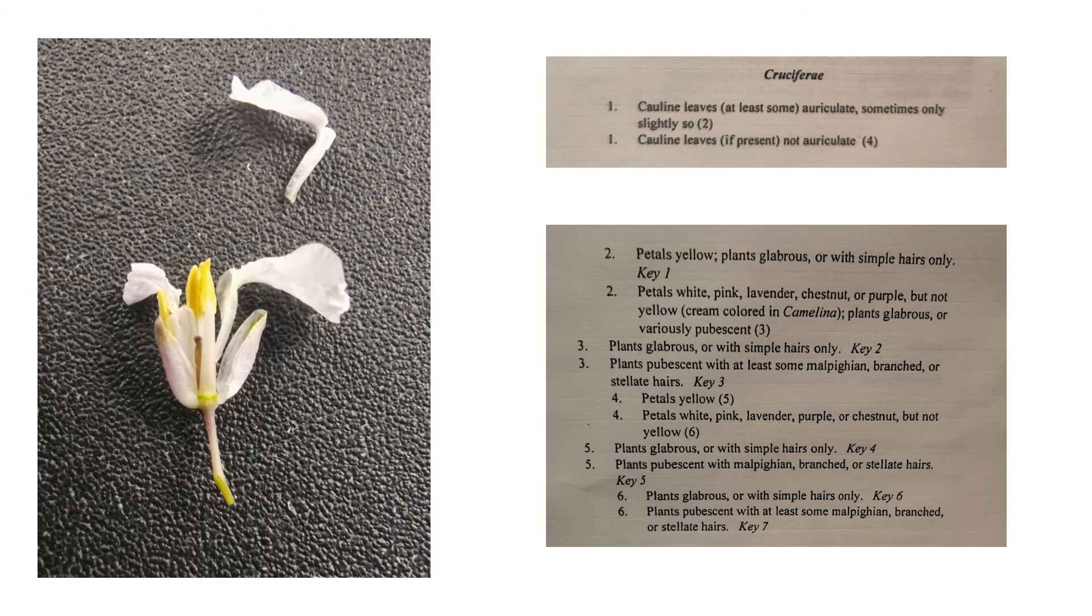Okay. Cauline leaves, at least some, auriculate, sometimes only slightly so. And these, the cauline leaves in this are auriculate. And you're probably asking, what does that mean? And auriculate means with auricles. And an auricle is an ear-shaped appendage. So, you know, say we're looking at a leaf that has a small little bump like this. This is going to be an auricle. Okay. So that's the case. So we're moving on to two.